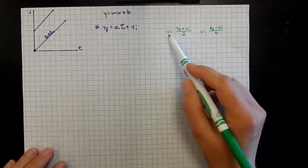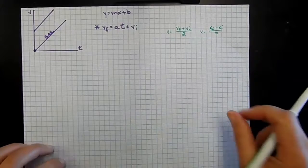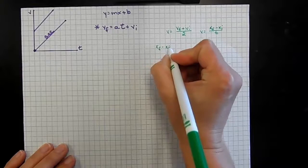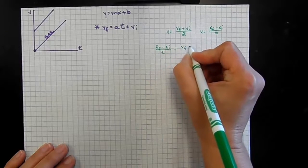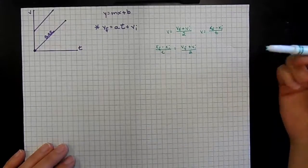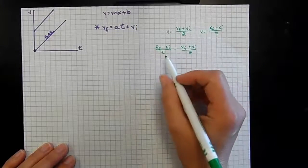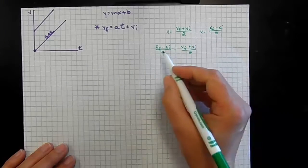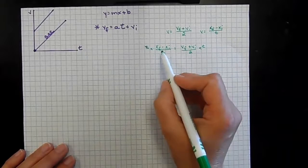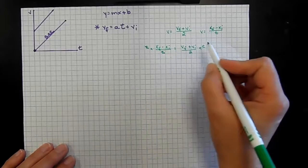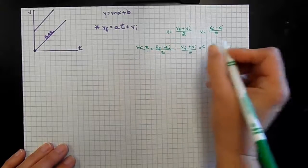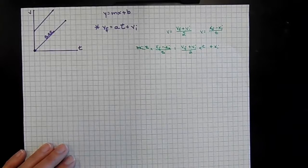We also know from our constant velocity model that velocity equals the final position minus the initial position divided by time. So change in position over time is also average velocity. Since both expressions represent average velocity, we can set them equal. So: final position minus initial position divided by time equals final velocity plus initial velocity divided by 2. What we really want to solve for is final position, so we rearrange with a little bit of algebra.